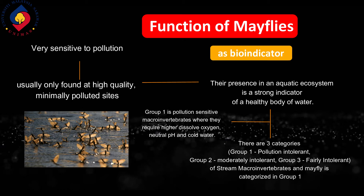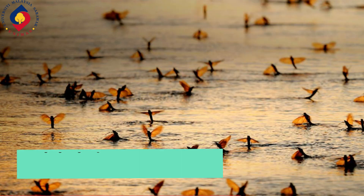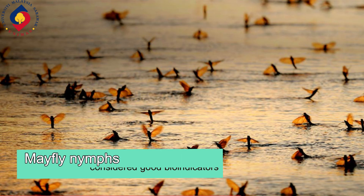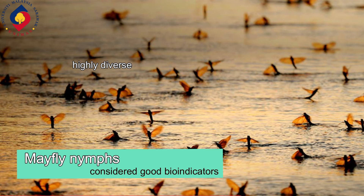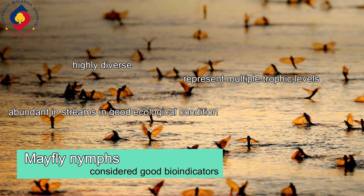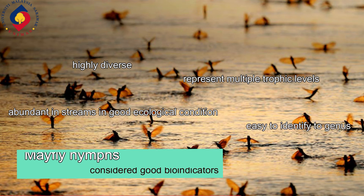For reference, the three groups are: Group 1 — pollution intolerant, Group 2 — moderately intolerant, and Group 3 — fairly intolerant. Mayfly nymphs are considered good bioindicators because they are highly diverse, abundant in streams in good ecological condition, represent multiple trophic levels, and are relatively easy to identify to genus.